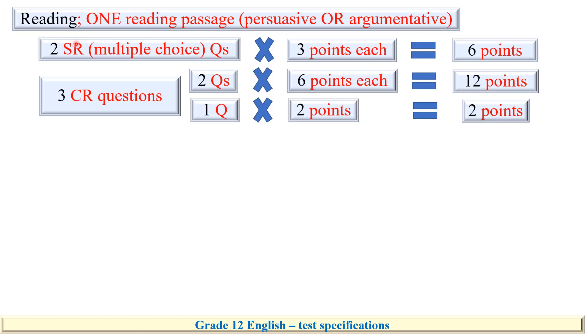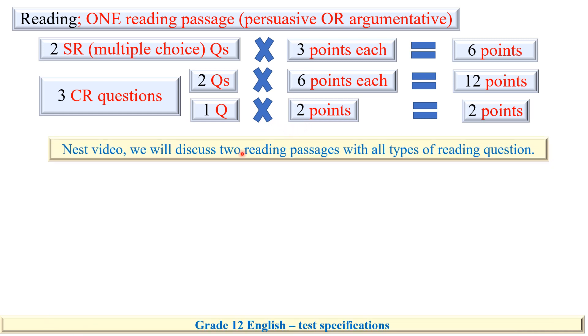As for the reading, you will be given just one reading passage, either persuasive or argumentative. Two SR questions, three points each, and three CR questions. Two of them are for six points each, and one is for two points. But because now we are short of time, next video inshallah we will discuss two reading passages with all types of reading questions.